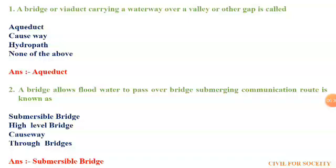The first question: the bridge or wider carrying a waterway over the valley or other gap is called. The first option is aqueduct, second is causeway, third is hydropath, and fourth is none of the above. You can pause the video and guess the answer. The answer is aqueduct.